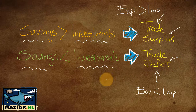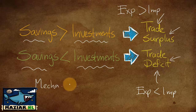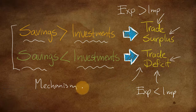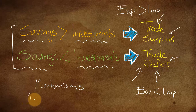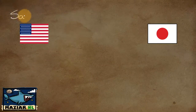Most economic textbooks stop at that point, but I'm going to explain the mechanism — why is it that savings relative to investment leads to these trade outcomes? There are multiple mechanisms; I'm just going to explain one of them, but hopefully it will clarify things for you.